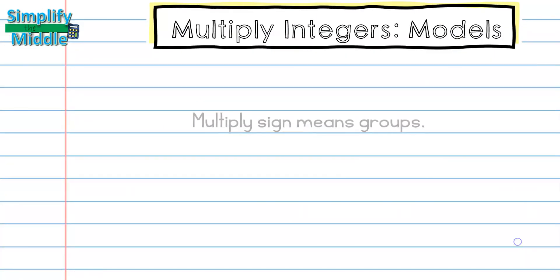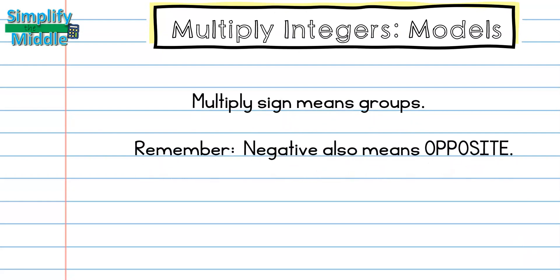Let's recap. We know that the multiply sign means we are working with groups of. And that negative can also mean opposite.